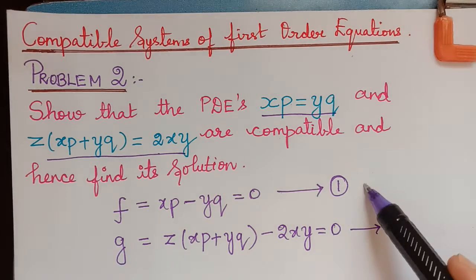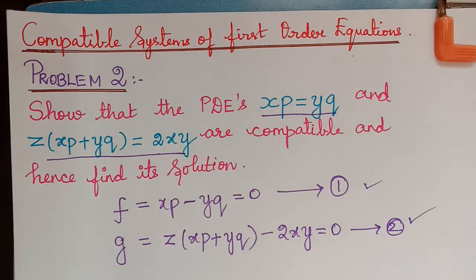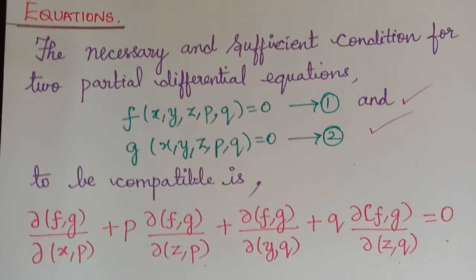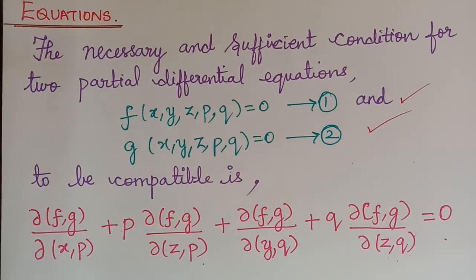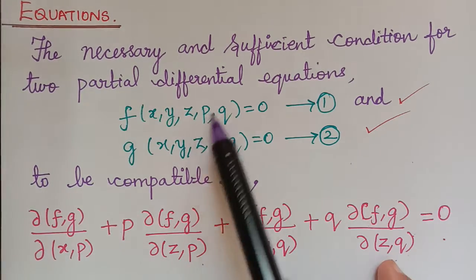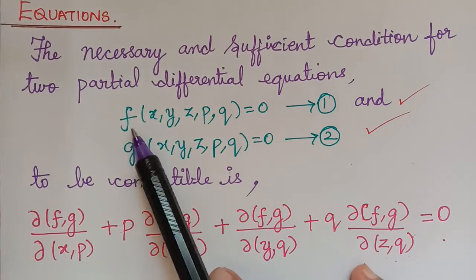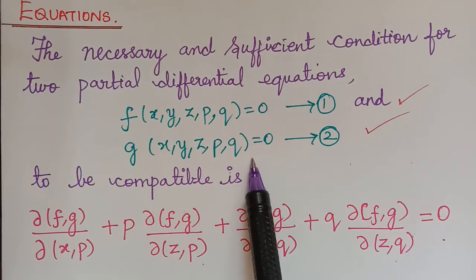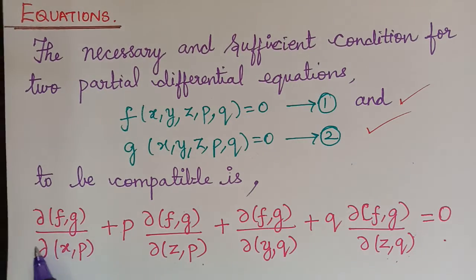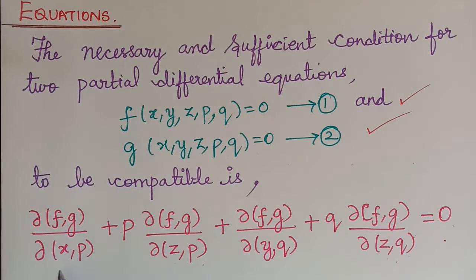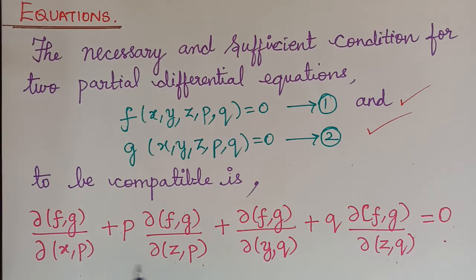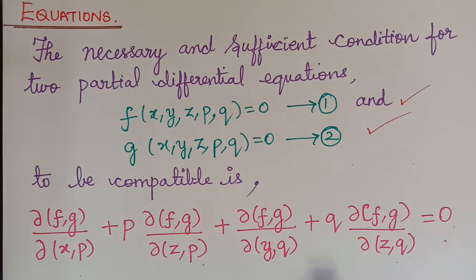Now we have to prove that these two systems of equations are compatible, for which we have to prove the compatibility condition. The necessary and sufficient condition for two partial differential equations — where f is a function of x, y, z, p, and q, and g is also a function of those same variables — is this condition. If we prove this condition, we will have proved that the given PDEs are compatible.